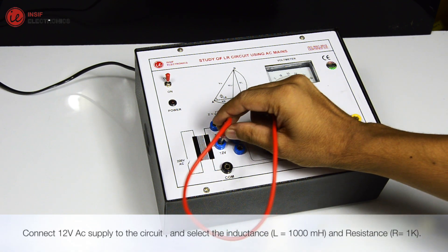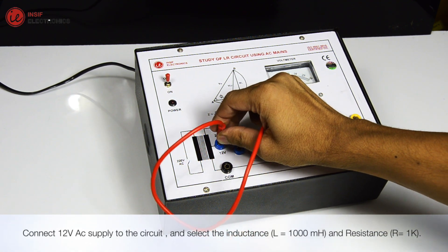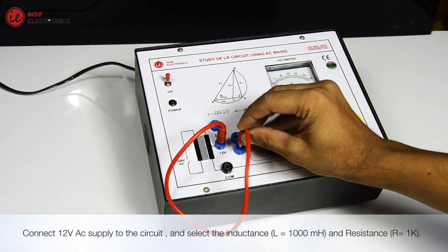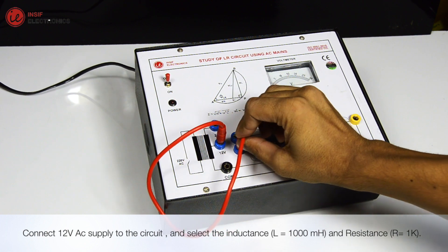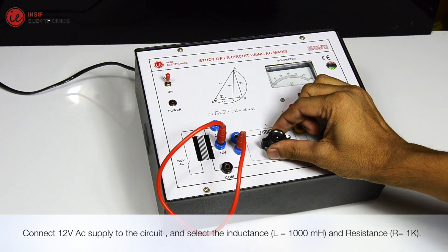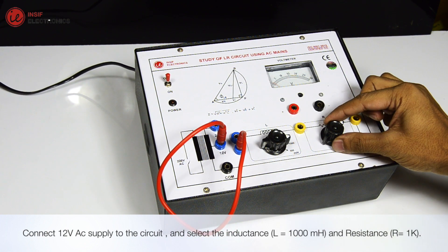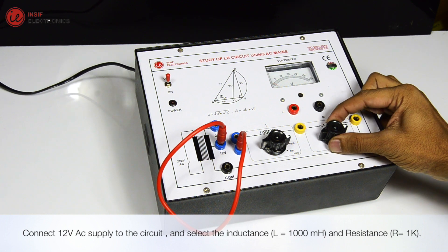Connect a 12 volts AC supply to the circuit, and select the inductance L equals 1000 mH and resistance R equals 1 kΩ.